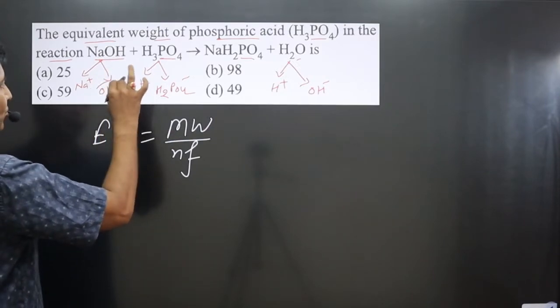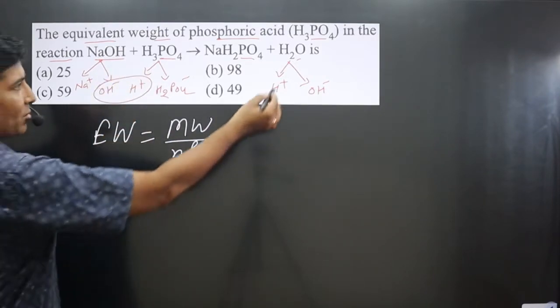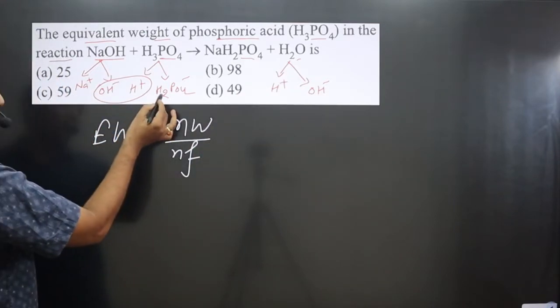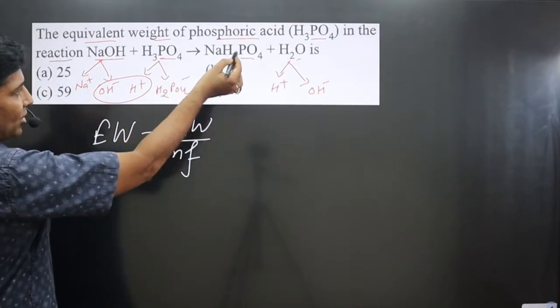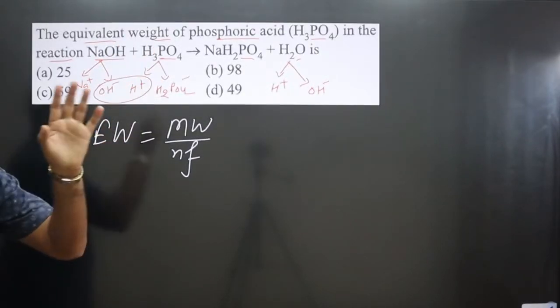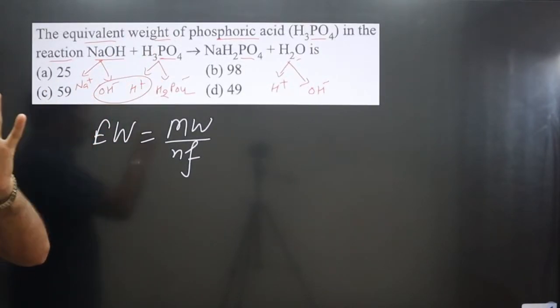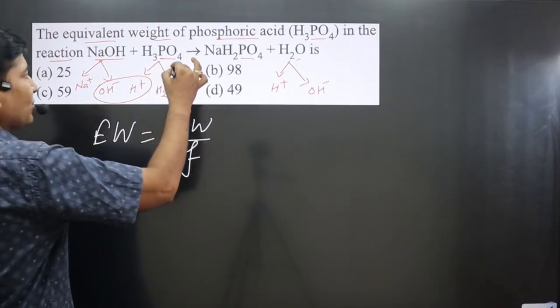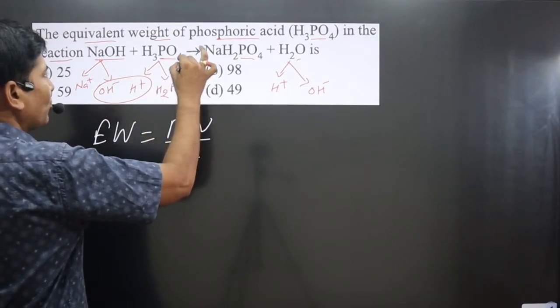H⁺ and OH⁻ combine to form water, while Na⁺ combines with H₂PO₄⁻ to form the salt. Since this substance liberates only one H⁺, the n-factor value for phosphoric acid is only one.